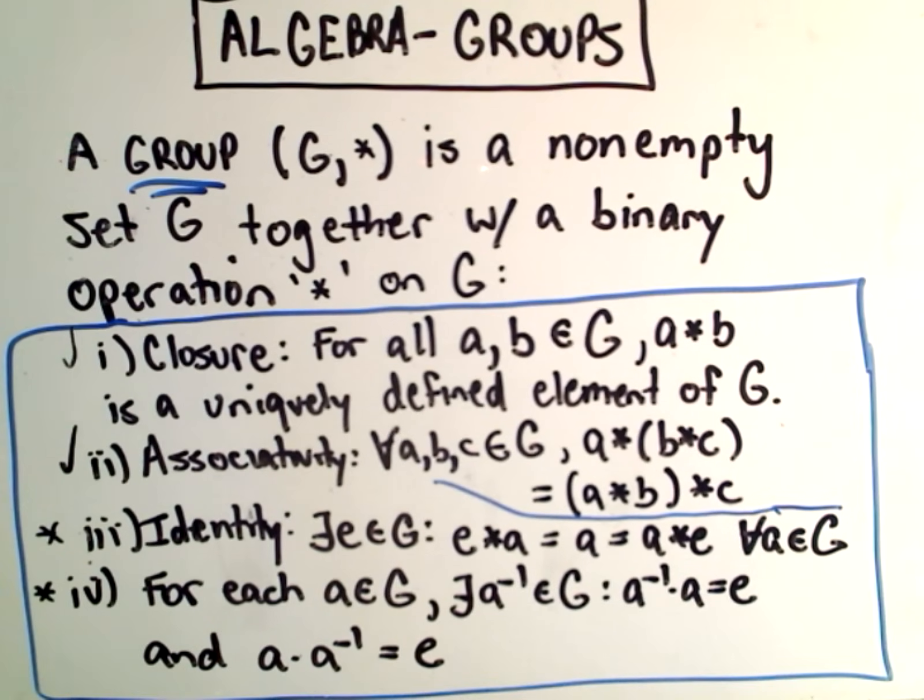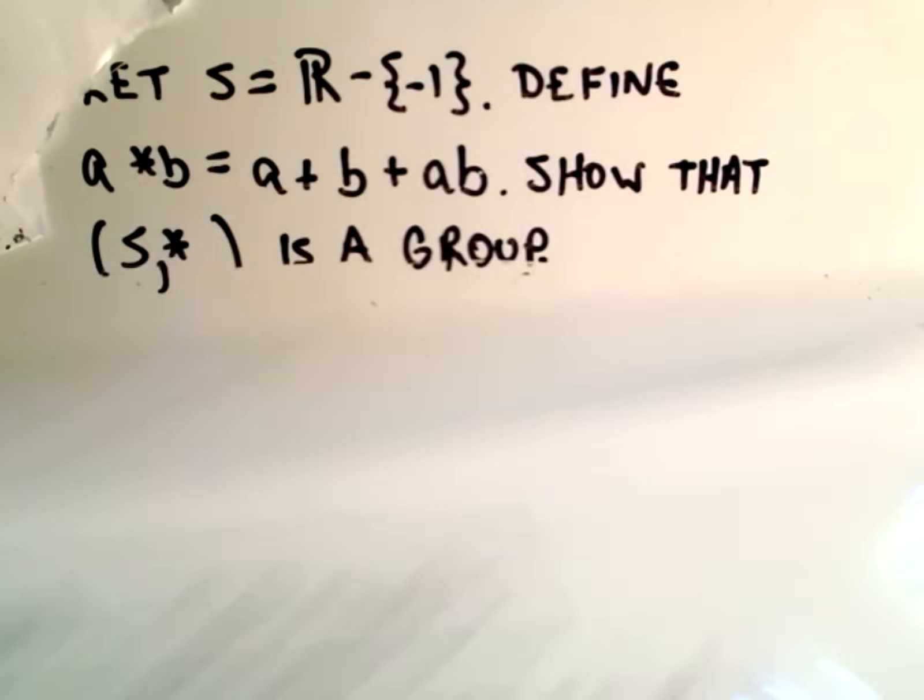Okay, in this part, I'm going to finish off the second part of my group example. So we showed one and two conditions, the first two conditions. I'm going to show that there's an identity and that inverses exist.